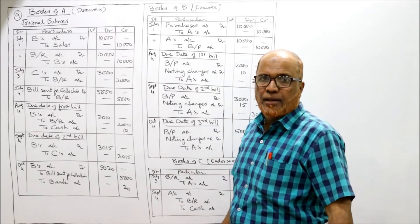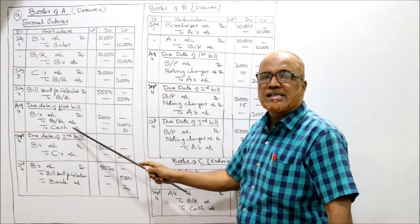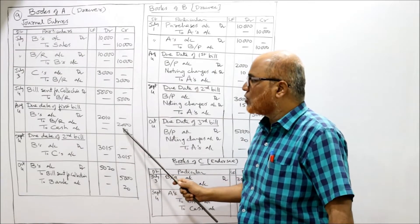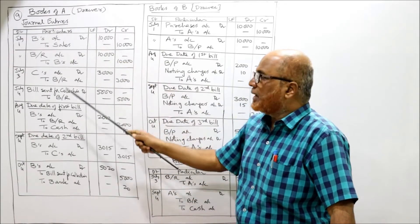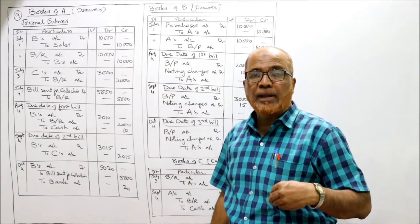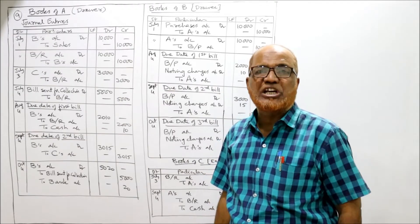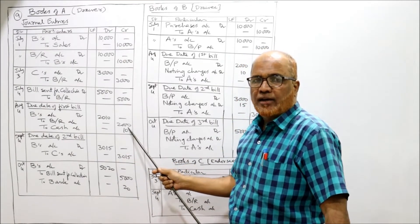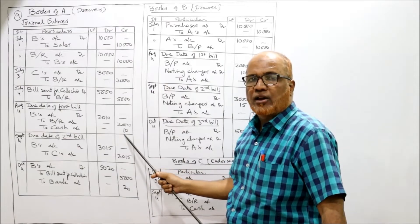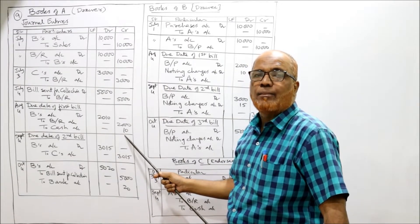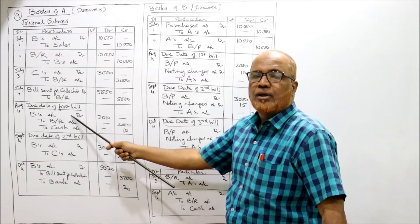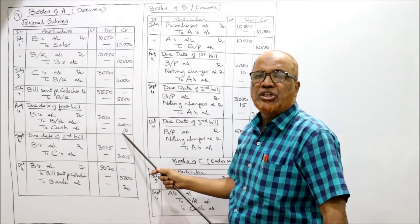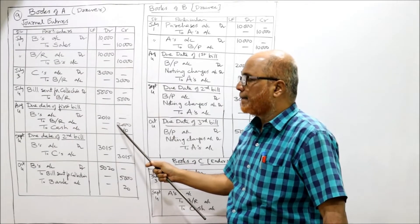B's account debit 2,010 — to bills receivable 2,000, to cash 10 rupees. A has to pay the noting charges cash from his own pocket because A has kept the first bill with himself. The bill is 2,000 and cash paid is 10 rupees, so total 2,010 is the amount due from B. Entry: B's account debit 2,010 to bills receivable 2,000 to cash, being the first bill dishonored on due date.